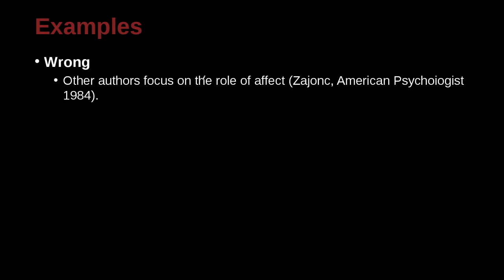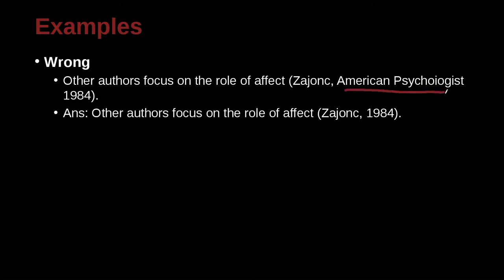Other authors focus on the role of affect. Here you can see there's a comma and then a journal name. However, in APA we very clearly don't need a journal name — we just need the author, comma, year. Before the comma: no space. After the comma: one space. Then the year of the publication, for example 1984. That's all you need.